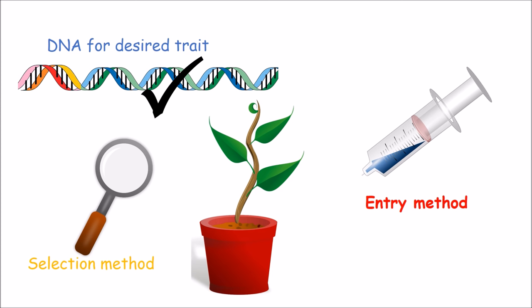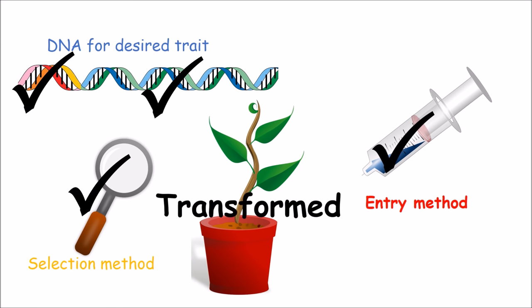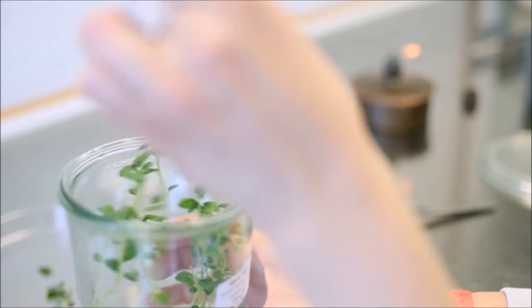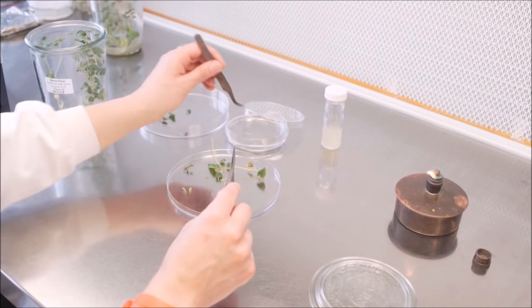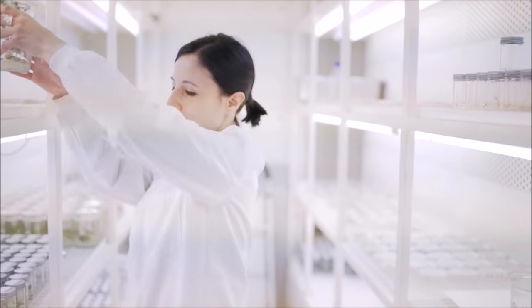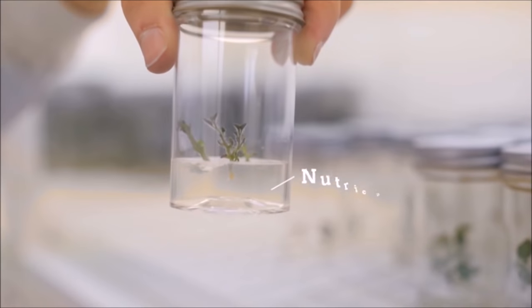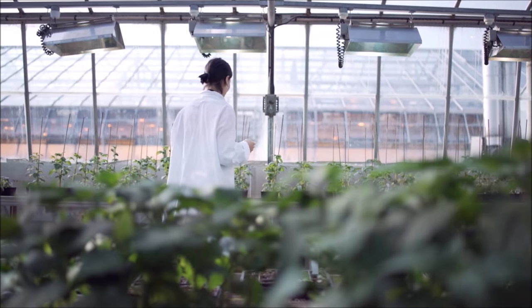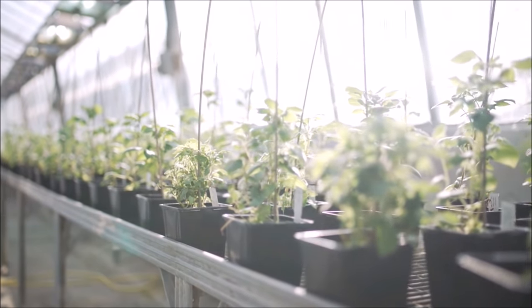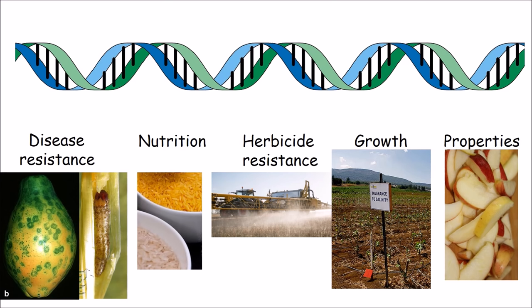So now we have the DNA for our desired trait, a selection method, and the choice of two different ways to get the DNA into the plant. Once the DNA is successfully integrated into the plant genome, the plant is described as transformed. Under sterile conditions, the plant cells are grown on media that contains both the antibiotic for selection and plant hormones. The antibiotic ensures that only cells that were transformed will grow, and the plant hormones allow for the generation of an entire plant from just a few plant cells. After the plant has generated both the root and shoot portions, it can be transferred to regular soil, and the new properties of the plant can be tested.